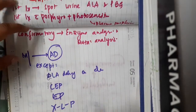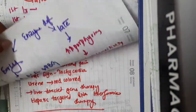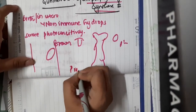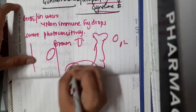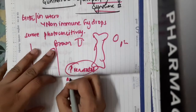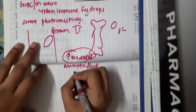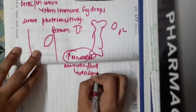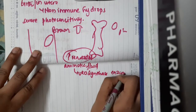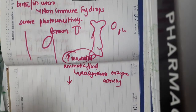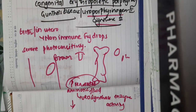Since congenital erythropoietic porphyria is present at birth or in utero, prenatal diagnosis can be done with the help of amniotic fluid. You take amniotic fluid via amniocentesis and find the urosynthase enzyme activity in the amniotic cells. If this enzyme activity is decreased, you can diagnose it as congenital erythropoietic porphyria or Gunther's disease.